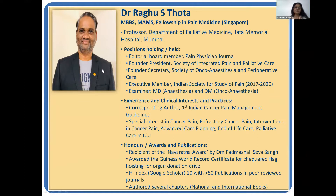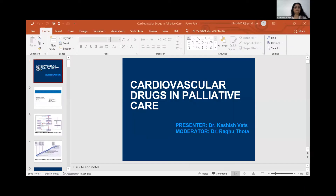He has a high Google Scholar index of 10 with more than 50 publications in peer-reviewed journals and has authored several chapters in national and international books. Today Kashish and Ragu will explain the drugs used in palliative medicine for the cardiovascular system. Please send your questions in the chat box and we will take all questions at the end. Kashish, you can start.